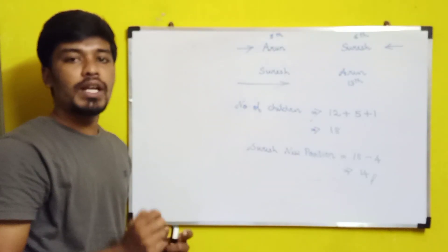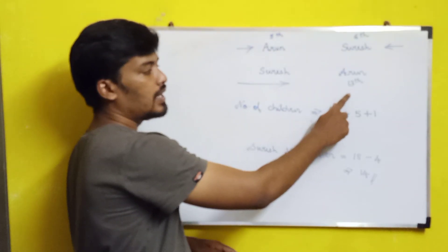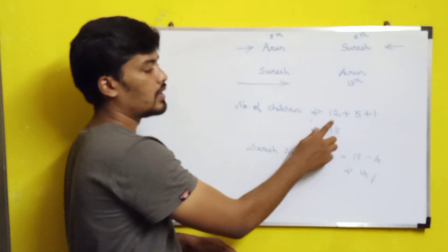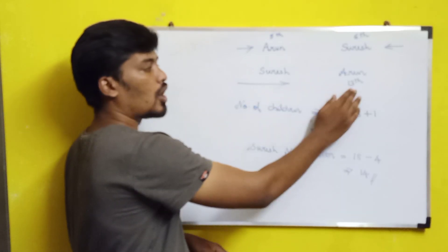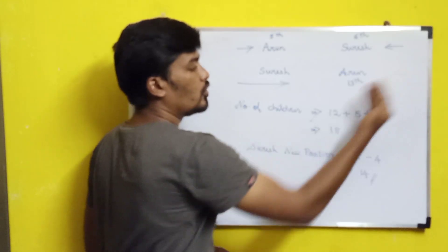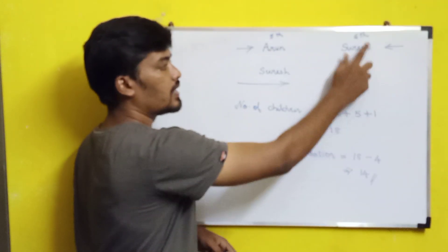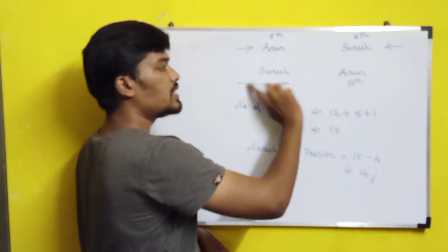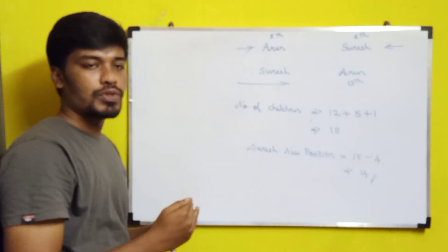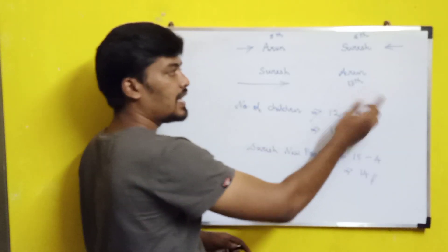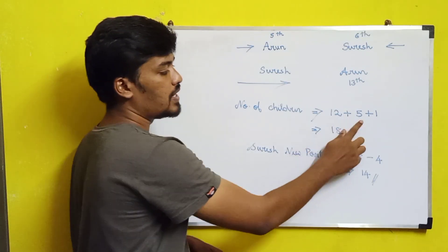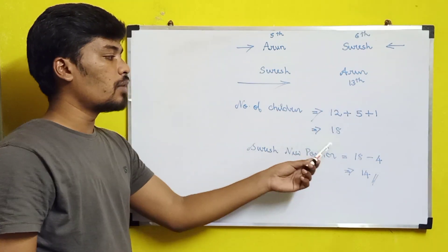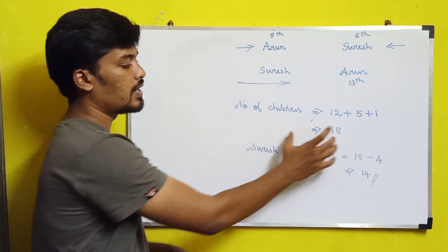To find the total number of children, we look at Arun's new position of 13th from the left, meaning 12 children are standing before him. Since Arun has taken Suresh's original position and Suresh was 6th from the right, Arun is also 6th from the right, meaning 5 children are standing after Arun. So the total number of children is 12 plus 5 plus 1 (for Arun himself), which equals 18 children in the queue.